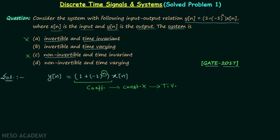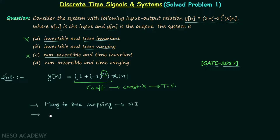Now we will find whether the system is invertible or non-invertible. We know that whenever there is many-to-one mapping, the system is going to be non-invertible, and whenever there is one-to-one mapping, the system is invertible.